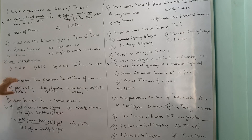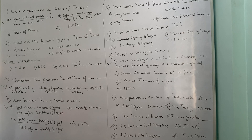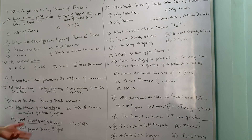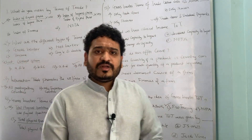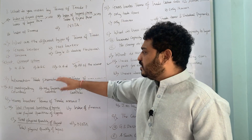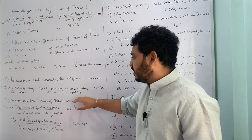The third question is a fill-in-the-blank: international trade promotes the welfare of blank. The options are: (A) all participating countries, (B) all exporting countries, (C) all importing countries, (D) none of the above. Since international trade benefits all parties involved, the correct answer is option A — all participating countries.